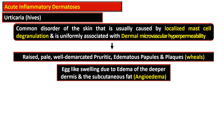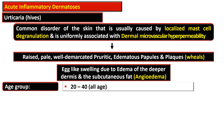Morphologically, there is a raised, pale, well-demarcated, pruritic, edematous papule and plaque termed as a wheal. There may also be development of egg-like swelling due to edema of the deeper dermis and subcutaneous fat, termed as angioedema. The commonly affected age group is 20 to 40 years, but it can affect any age.